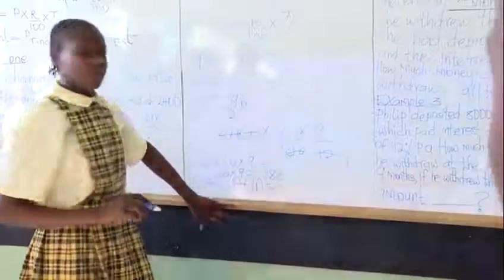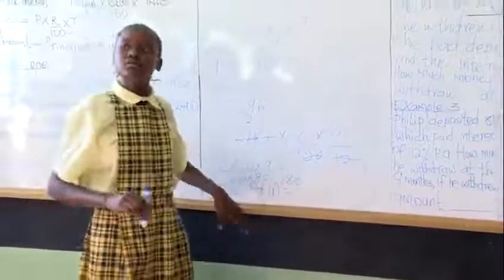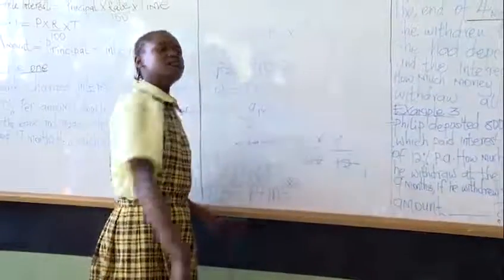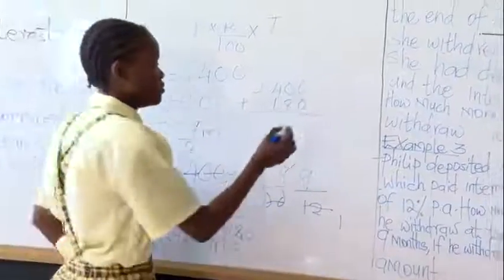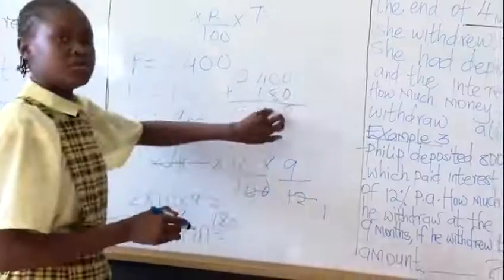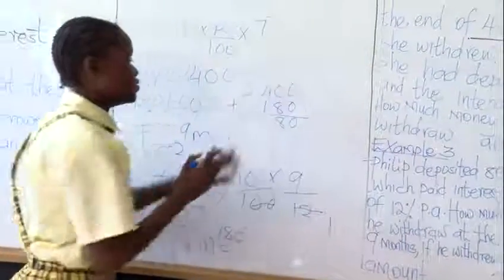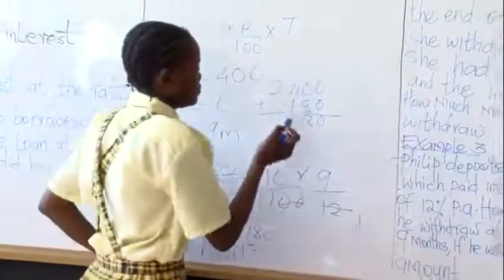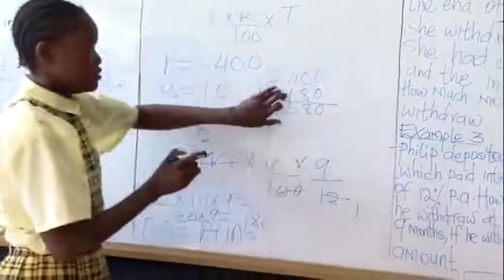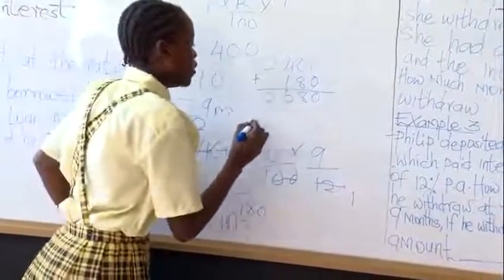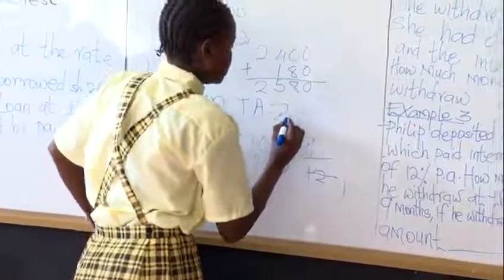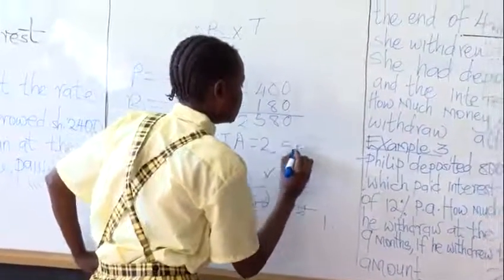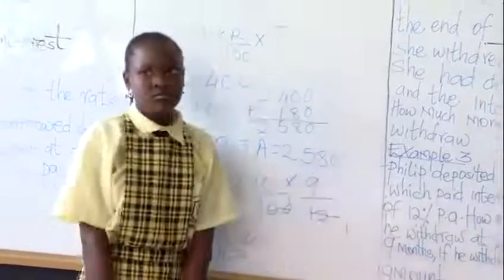Our principal is 0 plus 0, 0 plus 8, 8, 4 plus 1, 5, 2 plus 2. Our total amount is 2,500. Great.